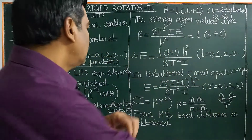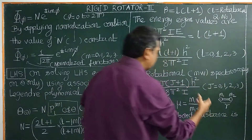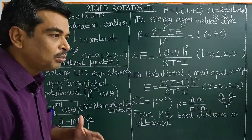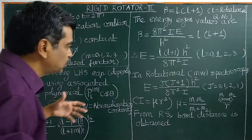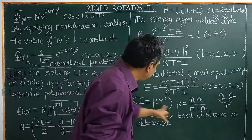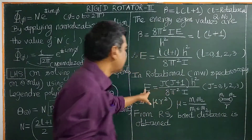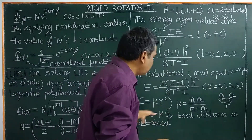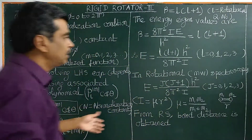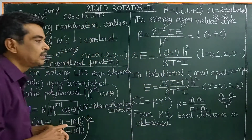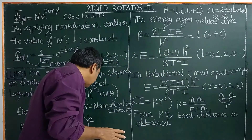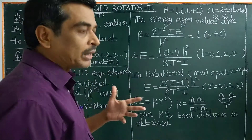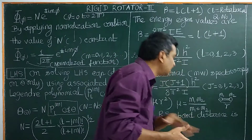I have shown this in another video. We know that H is Planck's constant. The energy values can also be obtained from the rotational spectrum. Once you know the energy values, we can calculate the bond distance using the energy equation delta E. Using rotational or microwave spectroscopy, the bond distance can be obtained for linear and non-linear molecules. This is very important.